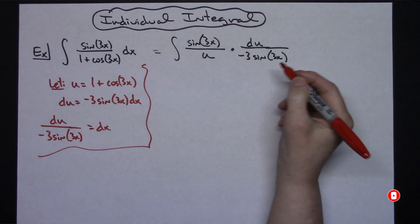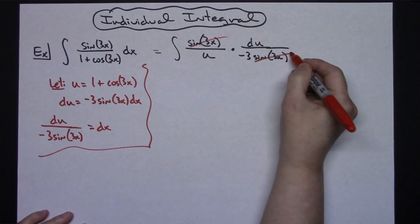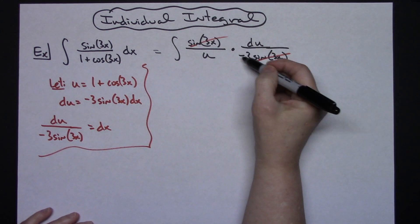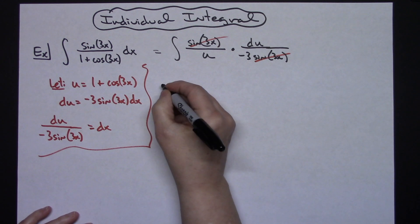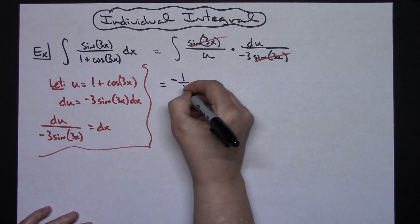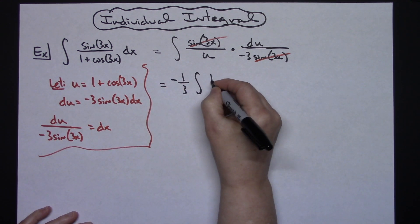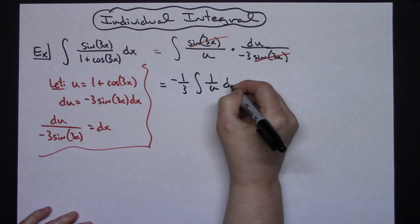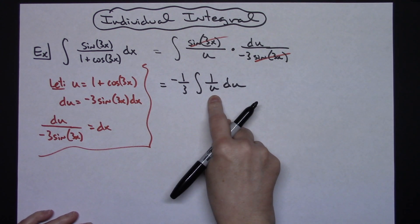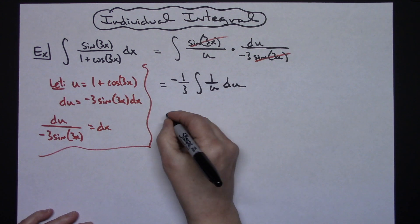That's going to allow me then to take those sine 3x's and cross those out. I'll have the negative 1/3 which we'll pull out in front. So a negative 1/3 the integral of 1 over u du, and hopefully at this point you have that memorized as natural log absolute value of u.